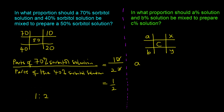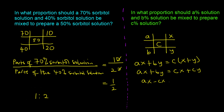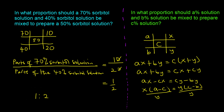Algebraically, A times x plus B times y must equal C times (x plus y). Distributing C gives: Ax + By = Cx + Cy. Rearranging: Ax minus Cx equals Cy minus By. Factoring out x on the left gives x(A minus C), and factoring out y on the right gives y(C minus B). Dividing both sides by y and by (A minus C) isolates the ratio x over y.